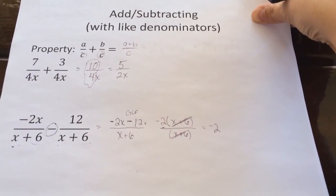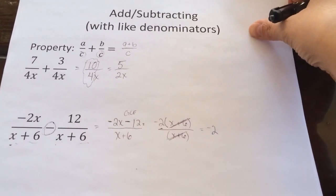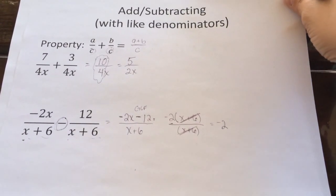So, if they have the same denominator, keep that denominator, add the numerator, see if anything will factor to make anything cancel.